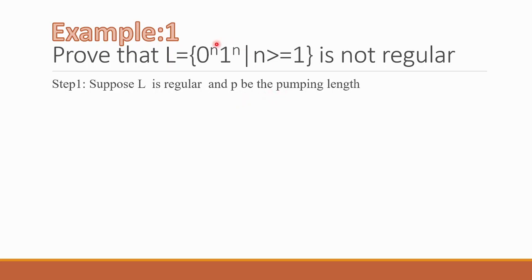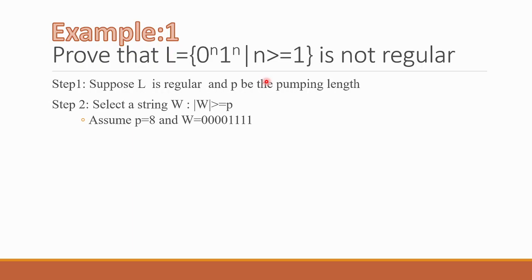Let L be regular and p be the pumping length. Assume p is equal to 8. Then select a suitable string w such that |w| is greater than or equal to p. I will make n equal to 4, so w = 0^4 1^4, which is 0000 followed by 1111. The total length is 8, which equals our pumping length. Assume this language is regular with pumping length 8, and this is our selected string.